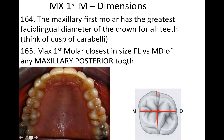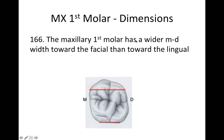On a test, be very careful about what they're asking — they could ask about maxillary posterior teeth, any tooth, or just posterior teeth. If they ask about just posterior teeth, you have to take into consideration that they're including uppers and lowers. The maxillary first molar has a wider mesial-distal width toward the facial than toward the lingual.